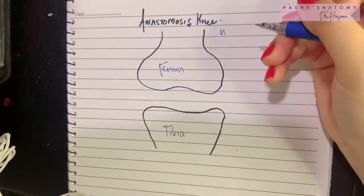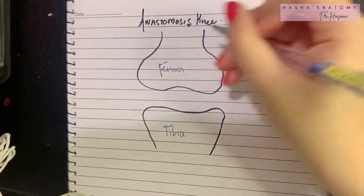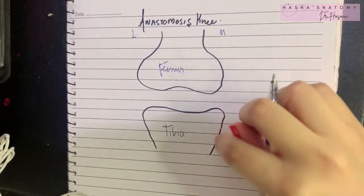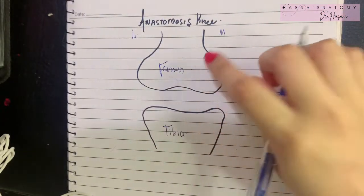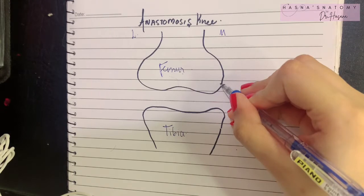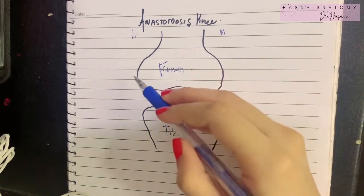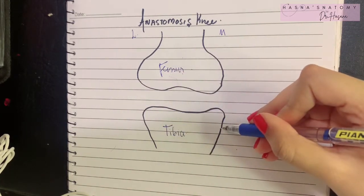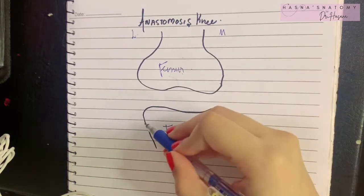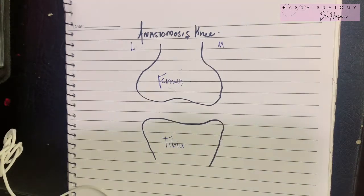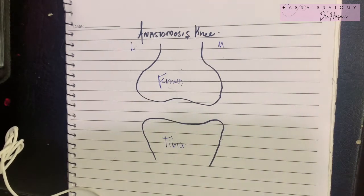Let's set up our orientation. This is the medial side and this is the lateral side of both the tibia and the femur. This is the medial condyle of the femur, this is the lateral condyle of the femur, this is the medial condyle of the tibia, and this is the lateral condyle of the tibia. Now let's go through what we've learned up to now.